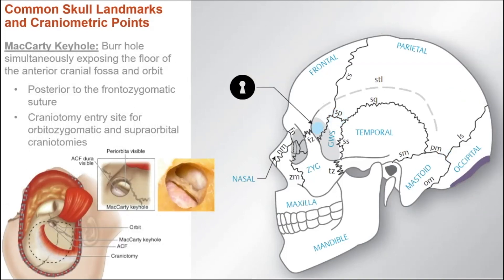Another point you may hear about is McCarty's keyhole, especially for the orbital zygomatic or suborbital approaches. It is a strategically placed burr hole behind the frontal-zygomatic suture, designed to simultaneously expose the floor of the anterior cranial fossa and the orbit — where you have both your dura and your periorbita.